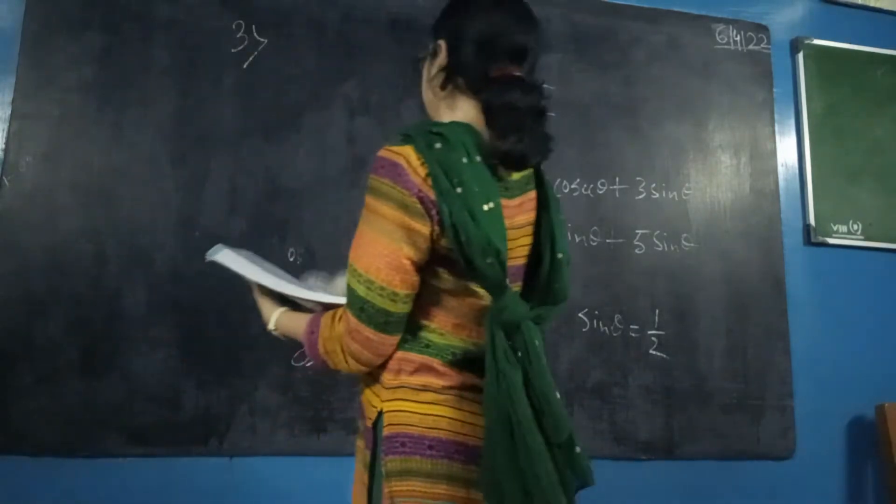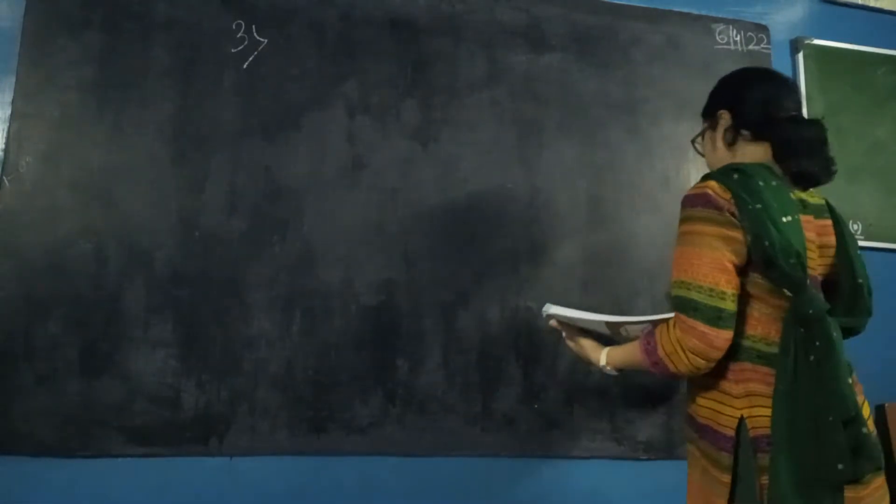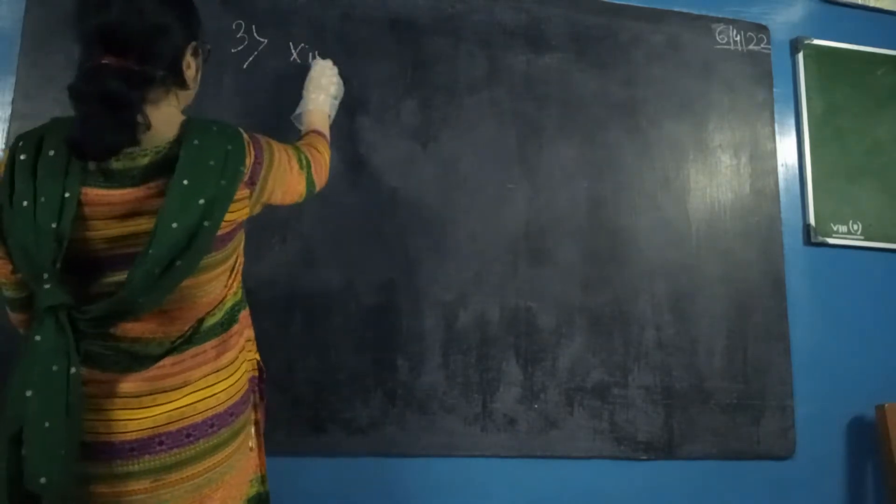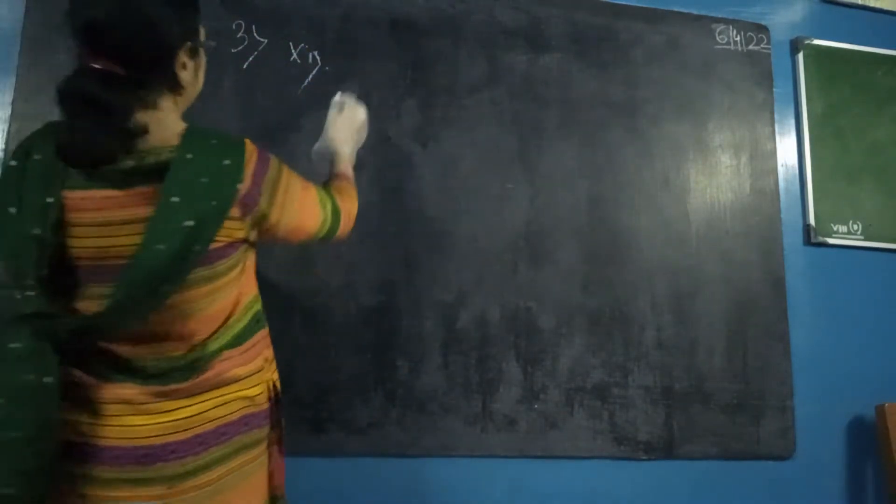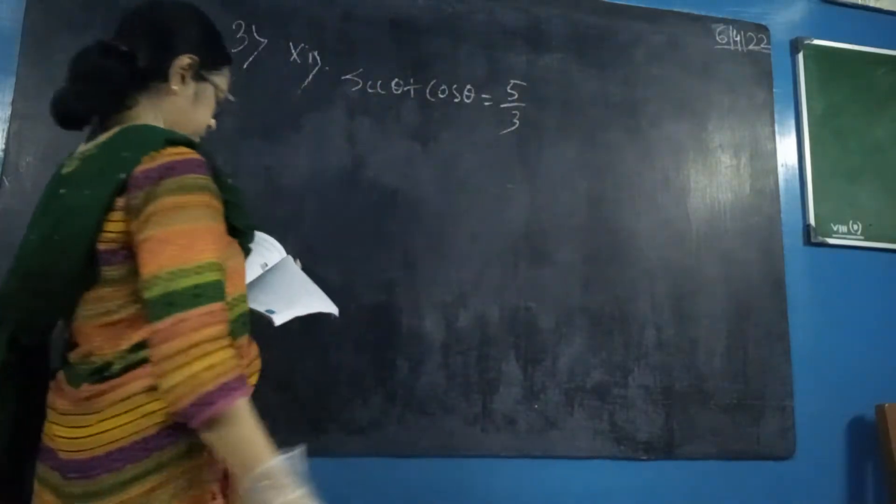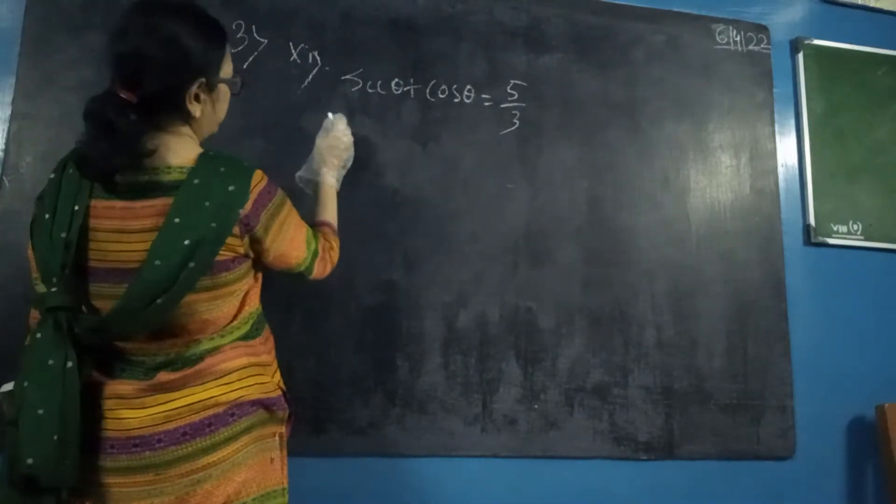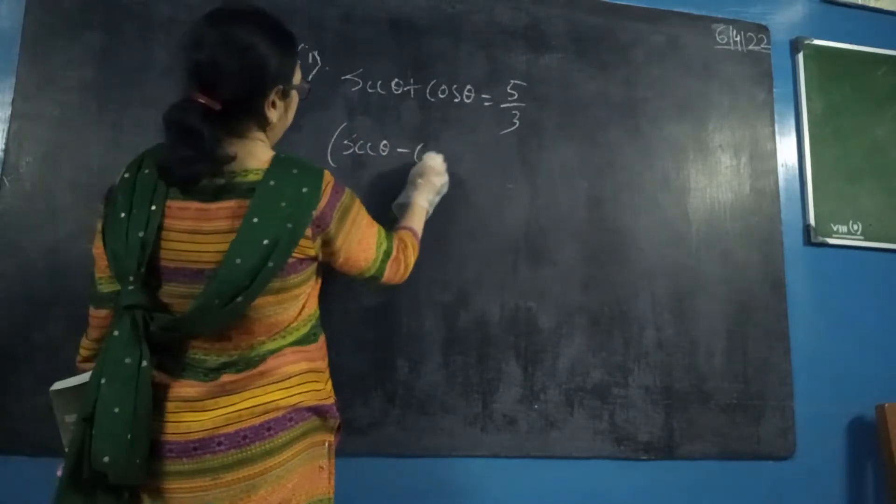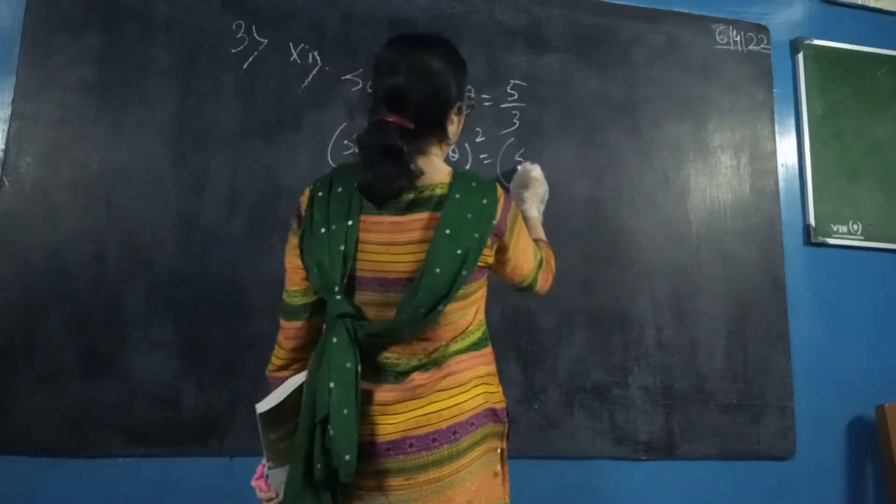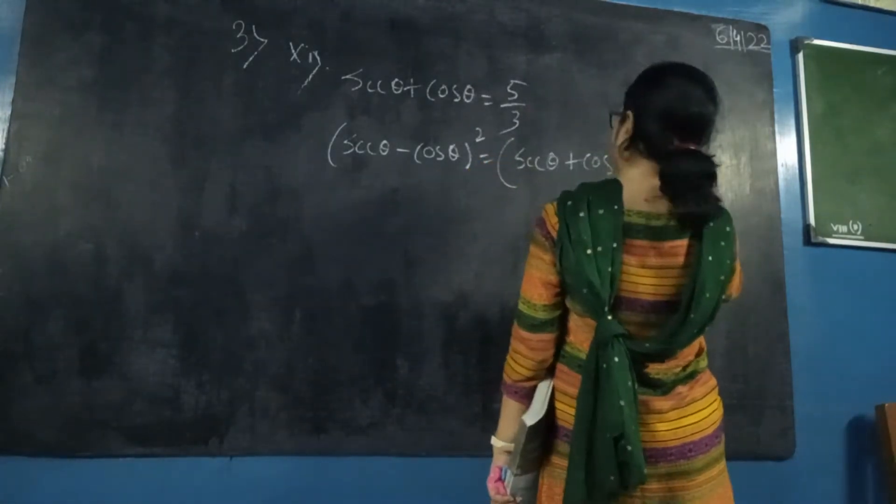Again, as the formula we have done, a plus b given, you have to calculate a minus b. So we know a minus b whole square equals to a plus b whole square minus 4ab.